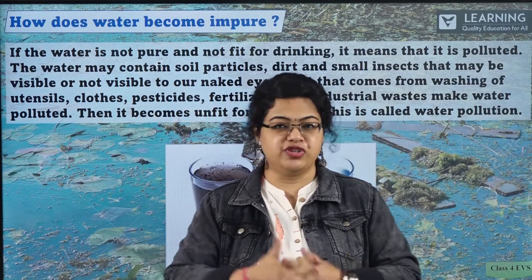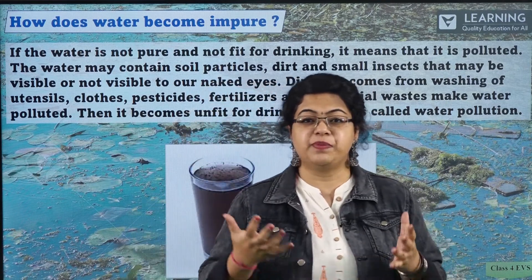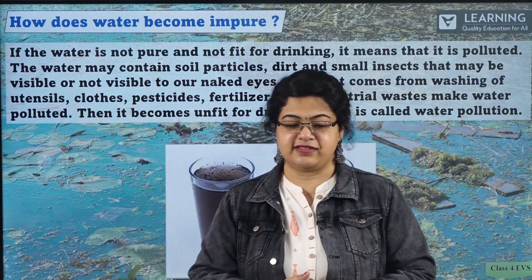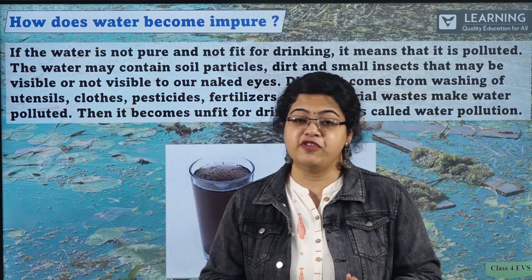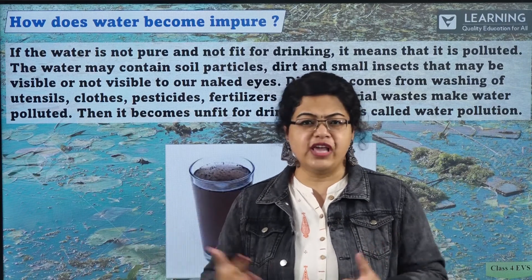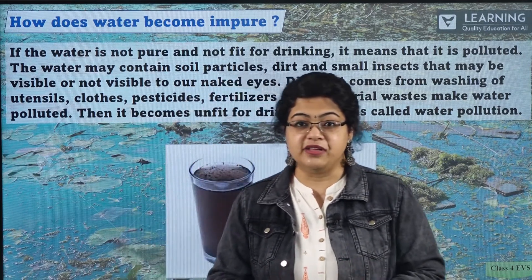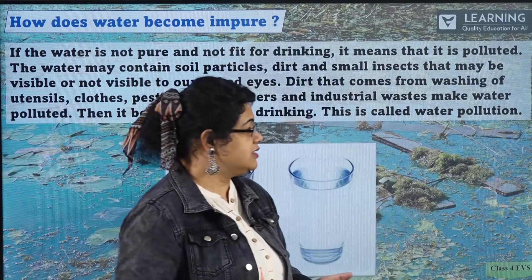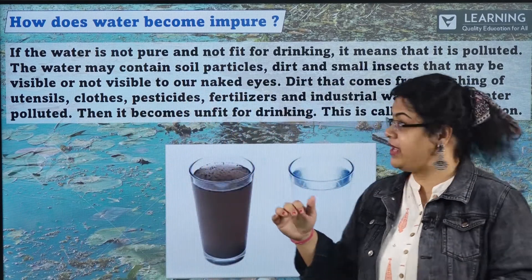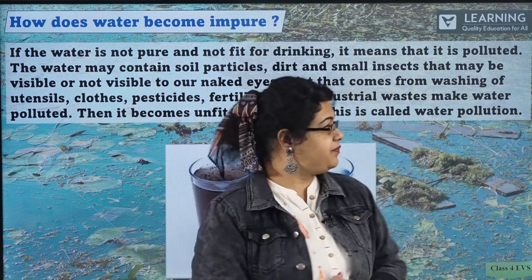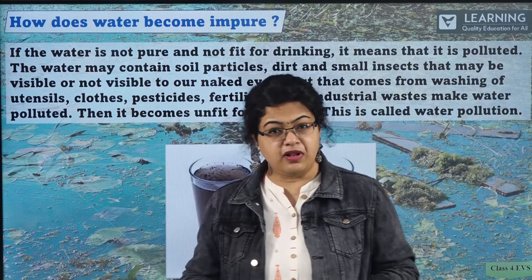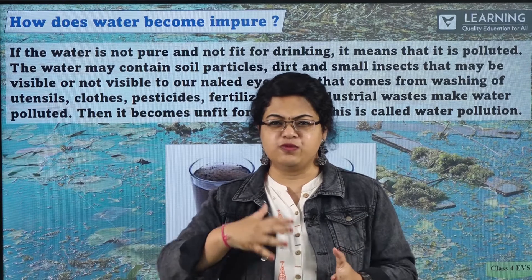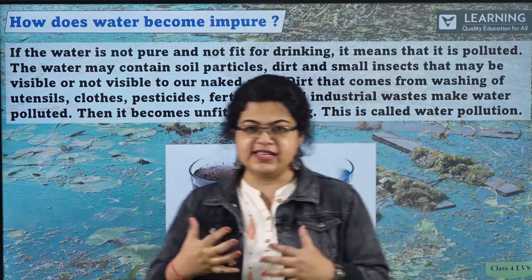What do you mean by pollution? Pollution is the unwanted particles or substances present in the environment that make the environment unfit for us. If the air is polluted, it will be hard for us to breathe — if it's foggy or smoky outside, it becomes difficult to breathe. Similarly, when water gets polluted, it becomes unfit for our use. The water may contain soil particles, dirt and small insects that may be visible. Sometimes you can see the impurities, but many times you don't — they are very minute microorganisms.